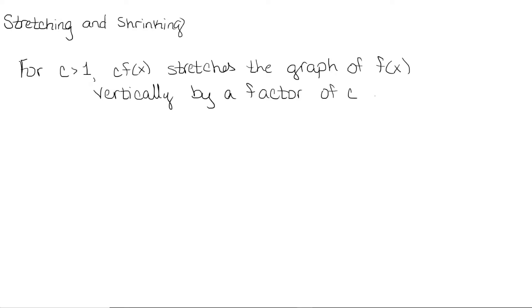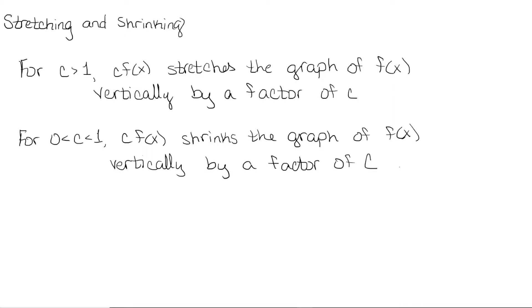Let's look at how to stretch or shrink the graph both horizontally and vertically. For c greater than 1, c times f will stretch the graph of f vertically by a factor of c. For c between 0 and 1, c times f shrinks the graph of f vertically by a factor of c. If we multiplied by a negative c, we would either stretch or shrink according to the absolute value of c and then reflect to account for the negative sign.